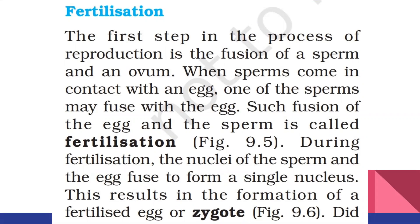After sperms are deposited by the penis, the sperms swim into the uterus and up the oviduct. If an ovum is present in an oviduct, one of the sperms may fuse with the ovum and fertilization takes place. During fertilization, the nuclei of the sperm and egg fuse together to form a single nucleus, resulting in the formation of the fertilized egg or zygote. The formation of the zygote marks the beginning of the new individual.